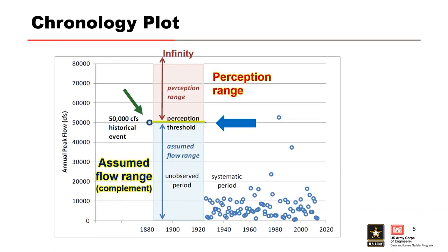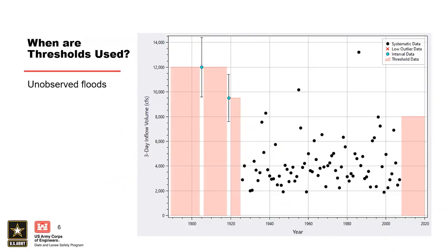Thresholds can be used to represent knowledge about flows during periods when we have no direct observation available. In this example, the systematic gauge record was discontinued. However, we can estimate a threshold using engineering judgment based on the knowledge that no large floods occurred since the gauge was discontinued. This threshold can be based on a value that captures the range of typical flood magnitudes that were observed during that systematic period. You're just using some engineering judgment there.